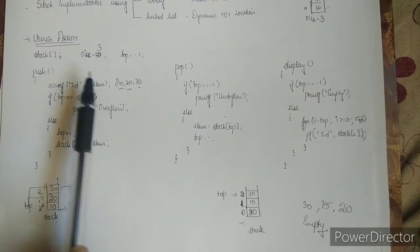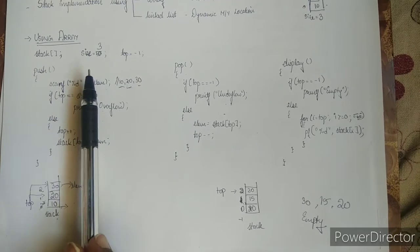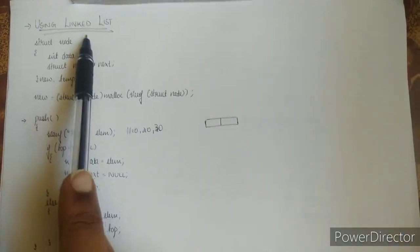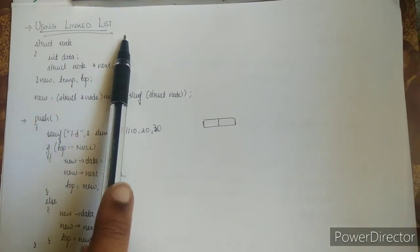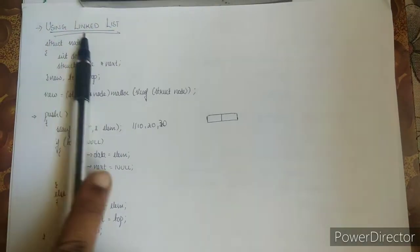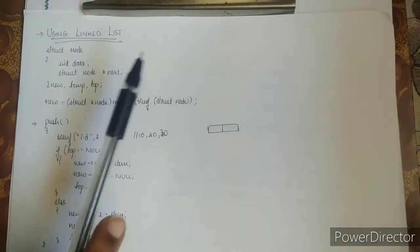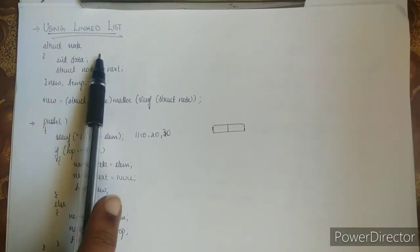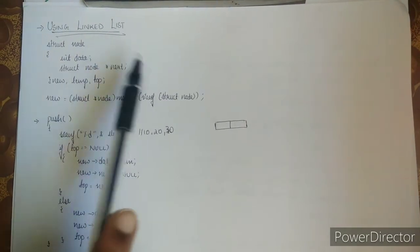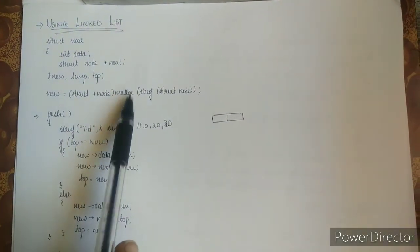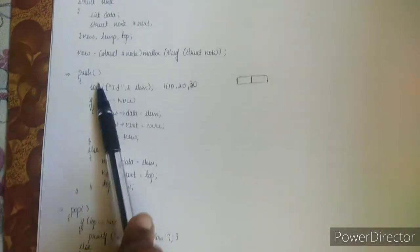In the next section, let's see how to implement a stack using a linked list. We will be using a singly linked list. The struct definition is: struct node with int data and struct node* next. Variables declared are: new, temp, top. The new node is created with malloc: new = (struct node*) malloc(sizeof(struct node)). Let's look at the push, pop, and display code snippets.